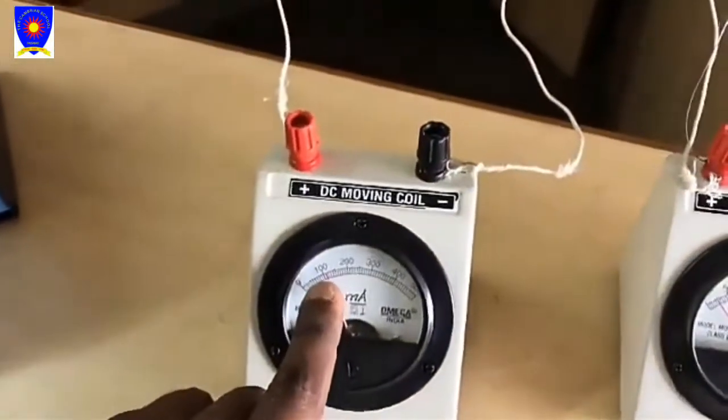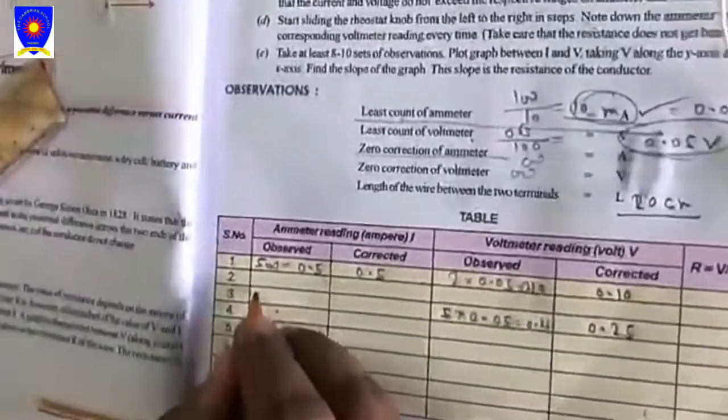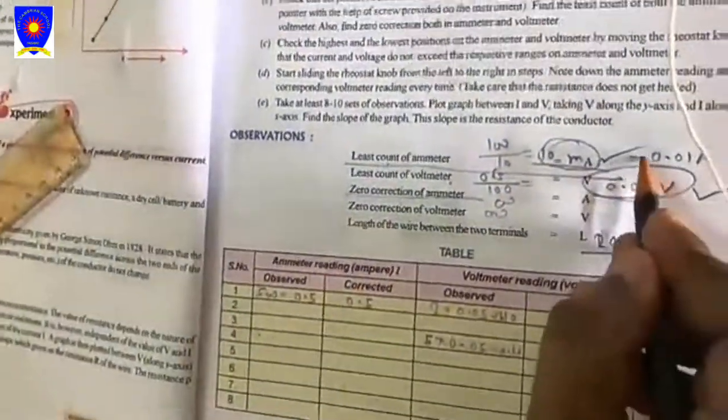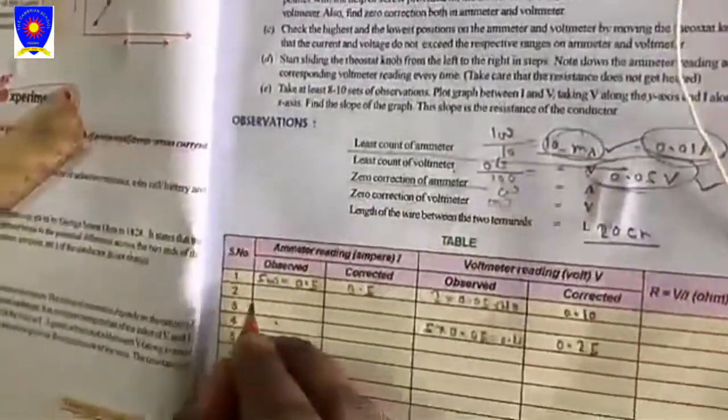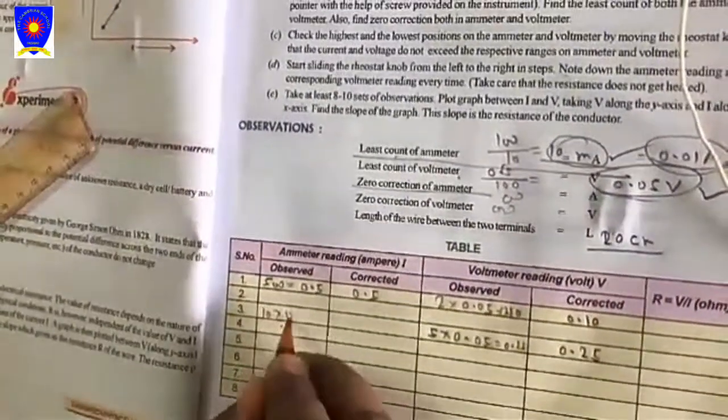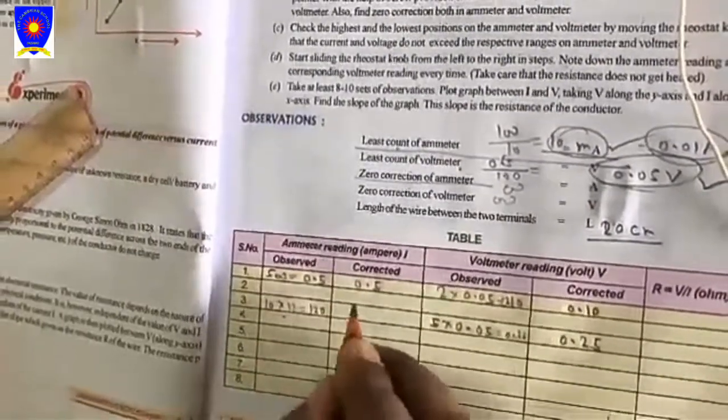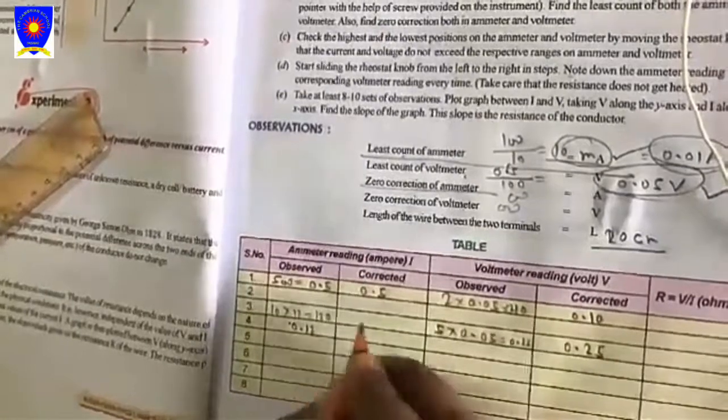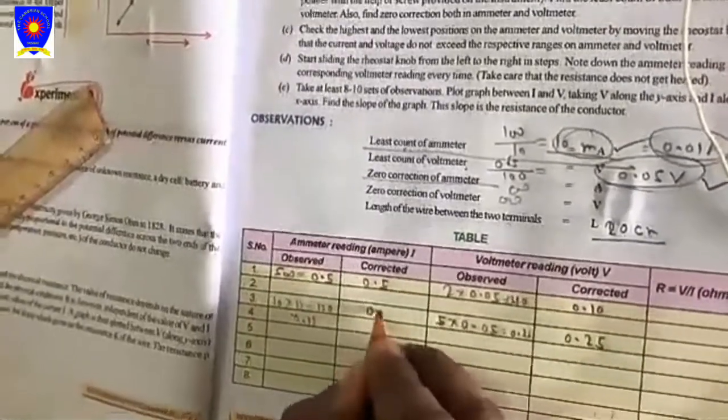And the current - we are looking that division is 12. Write here - least count is 0.01 ampere or 10 milliampere. So 10 into 12 means 120. Converted into ampere we will get 0.12 ampere. Its corrected value will also be 0.12 ampere. This is our second reading.